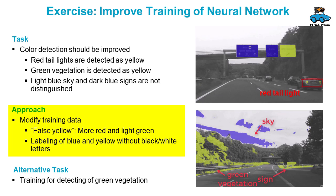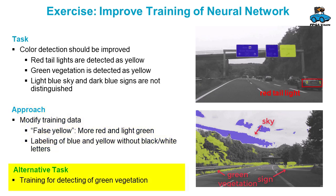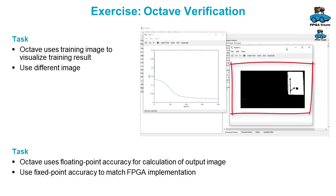You can provide blue and yellow labels without the black and white letters. As an alternative task, you can detect different things — for example, the green vegetation — and give totally different training to the network.